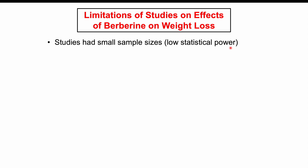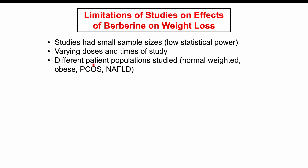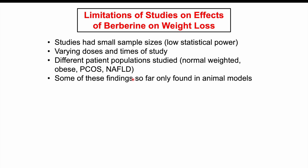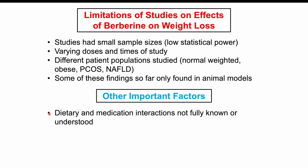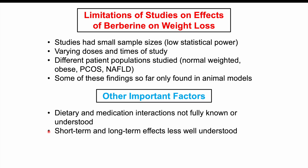There are important limitations to consider from these studies. They had small sample sizes and low statistical power, with varying doses and durations making it hard to determine optimal dosing over time. Different patient populations were studied — normal weight individuals, obese patients, PCOS patients, and non-alcoholic fatty liver disease patients — all of whom respond differently to changes in insulin sensitivity and weight loss. Some findings were only found in animal models so far, and dietary and medication interactions with berberine are not fully known. Short-term and long-term effects also remain less well understood.